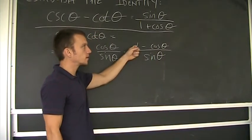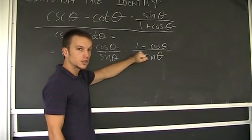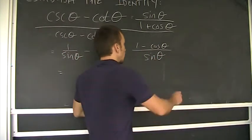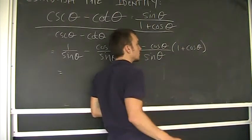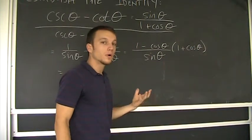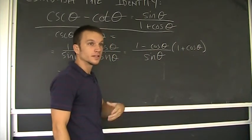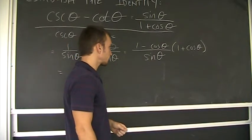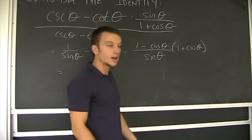I know if I multiply the top by one plus cosine theta, it should give me one minus cosine squared theta, which there's an identity for. Okay? I know there's another trig function that's equivalent to that. And I also can see this shows up in my answer. I know I'm supposed to end up with a one plus cosine theta in the denominator.